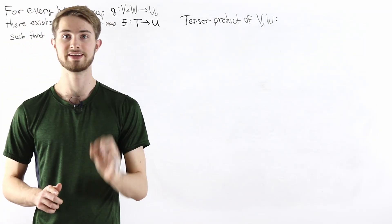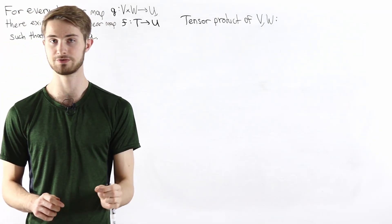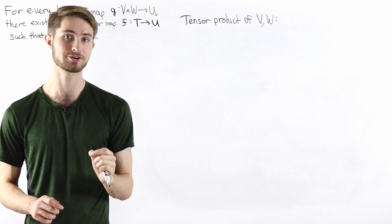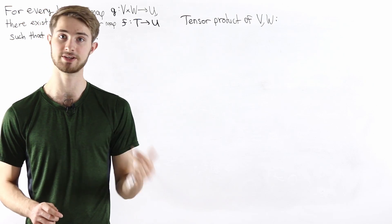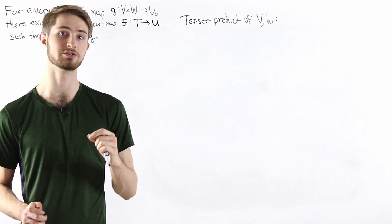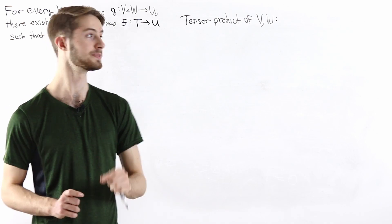We are going to prove that the tensor product is unique. This video is going to use the language of vector spaces, but the same reasoning also applies to tensor products of modules over a commutative ring.